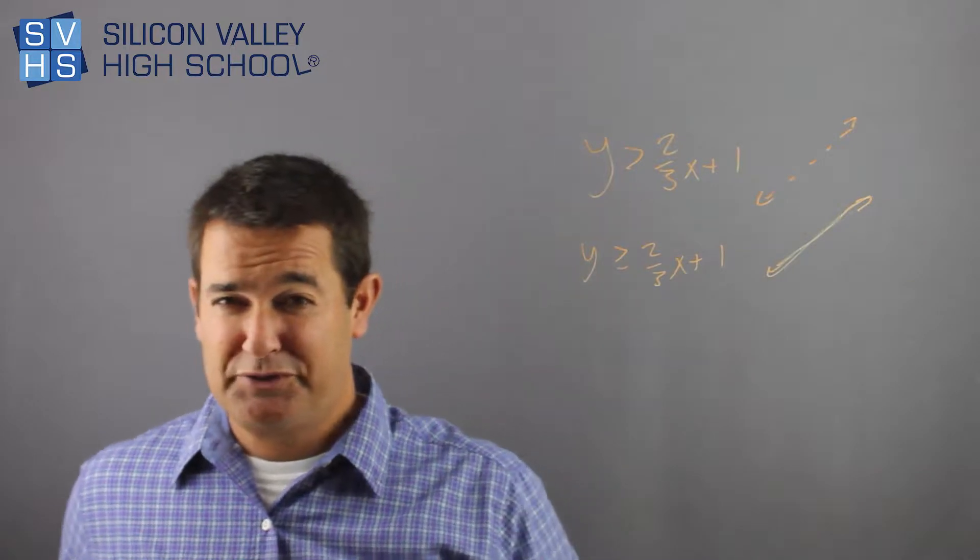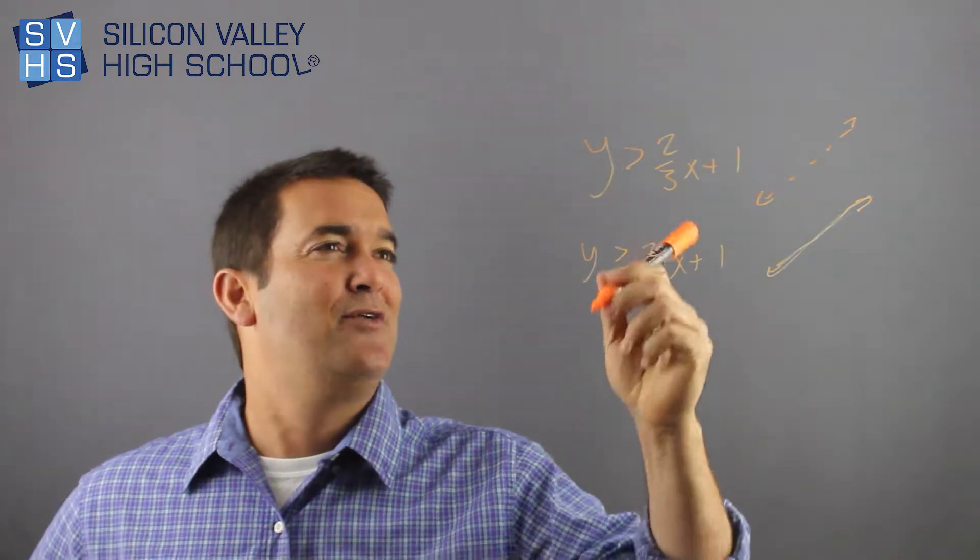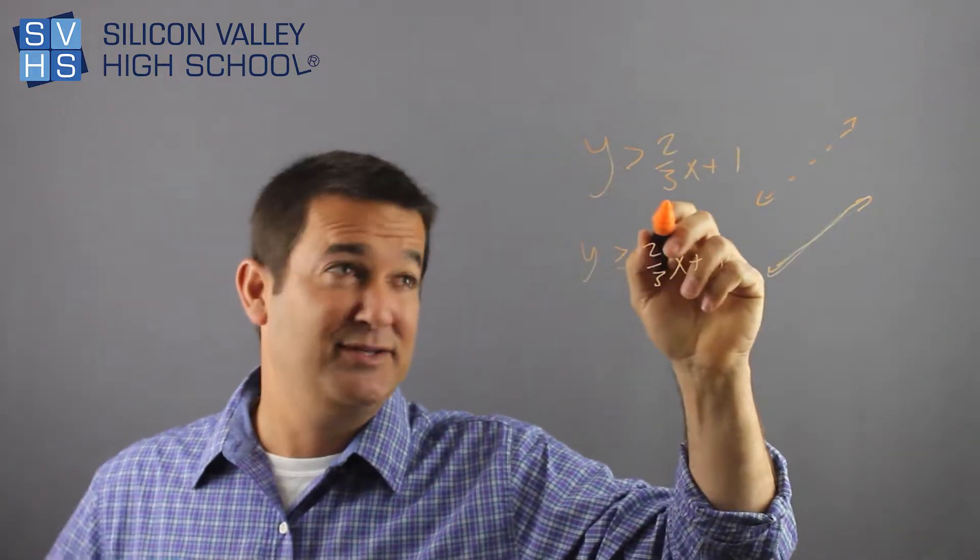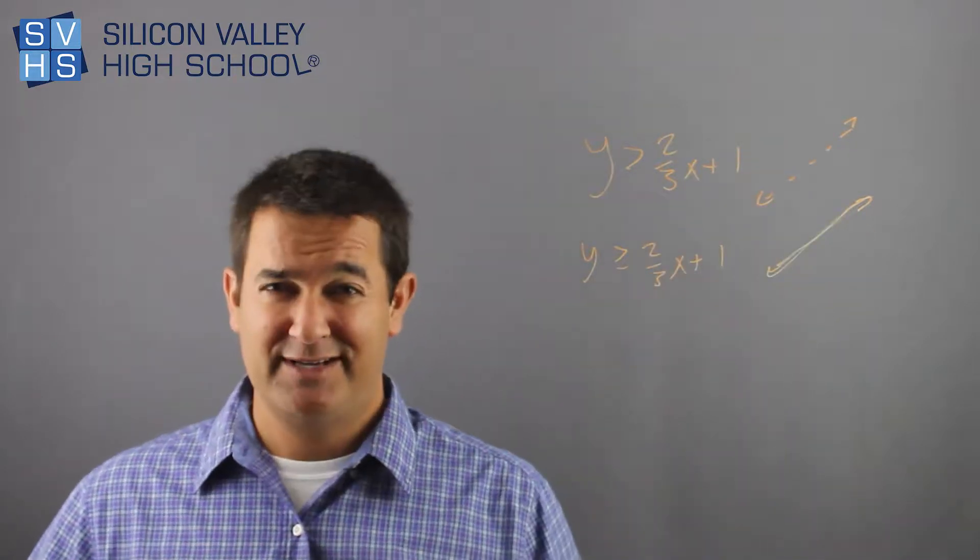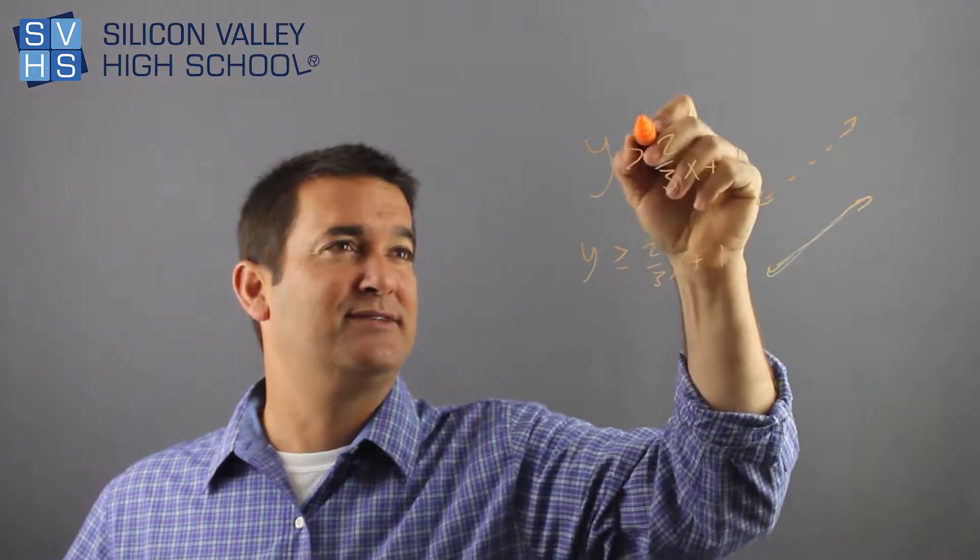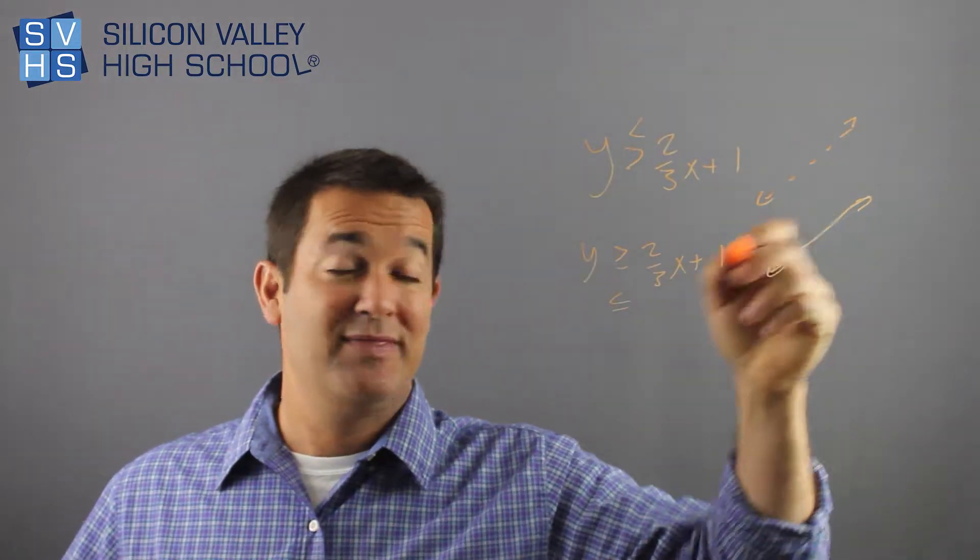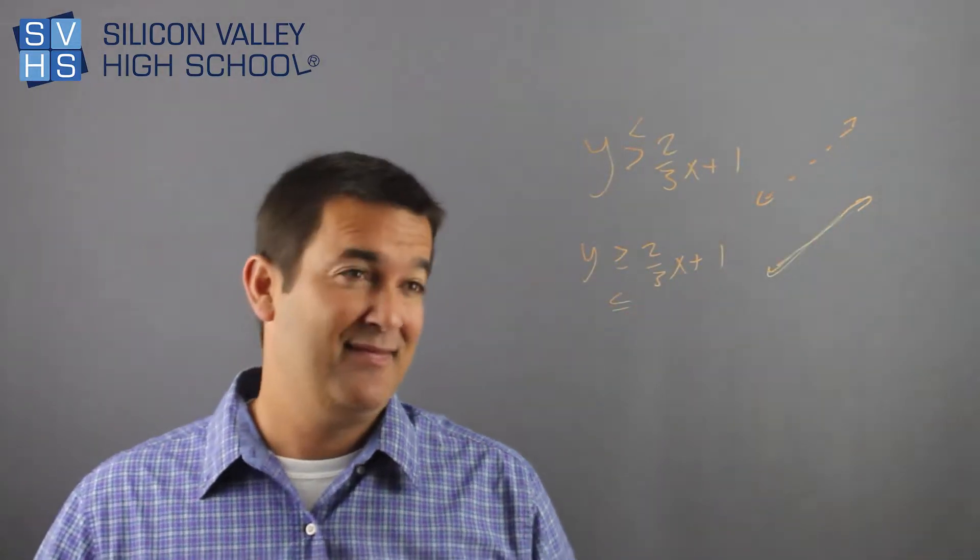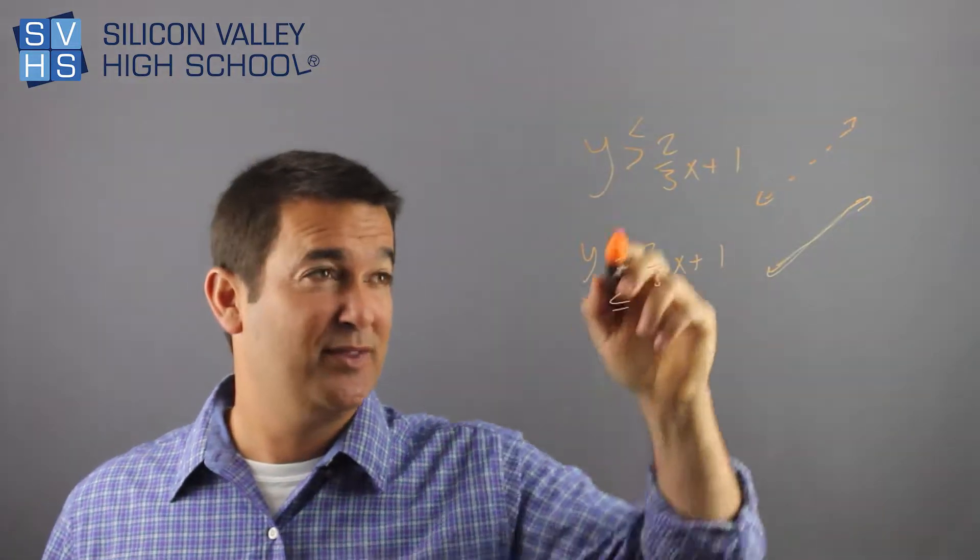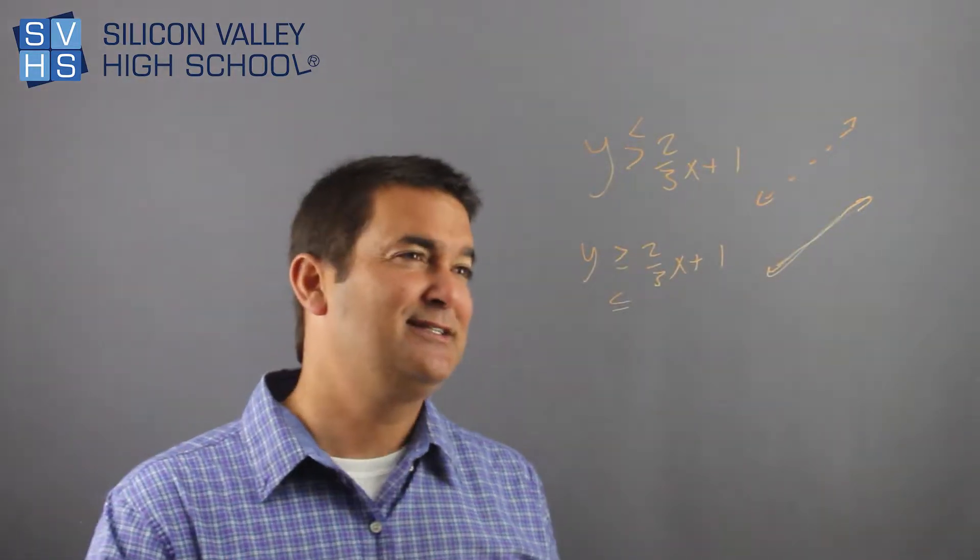If I took the same thing and now it's equal to, that is a solid line. So right out of the gates, it's kind of nice in a multiple choice type quiz. You know that if they wanted you to graph y is greater than two-thirds x plus one, you better have a dotted line. Same thing if it's less than. If it's greater than or equal to or less than or equal to, no matter what, that line had better be solid.